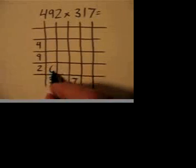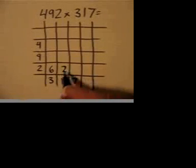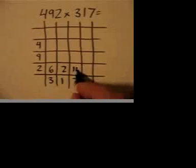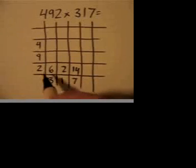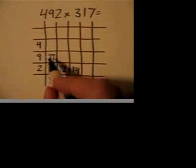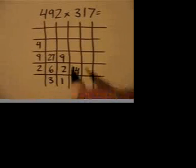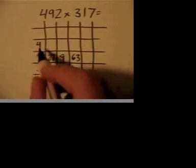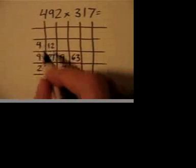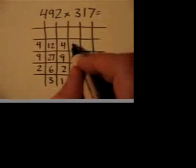2 times 3 is 6, 2 times 1 is 2, 2 times 7 is 14. 9 times 3 is 27, 9 times 1 is 9, 9 times 7 is 63. 4 times 3 is 12, 4 times 1 is 4, 4 times 7 is 28.